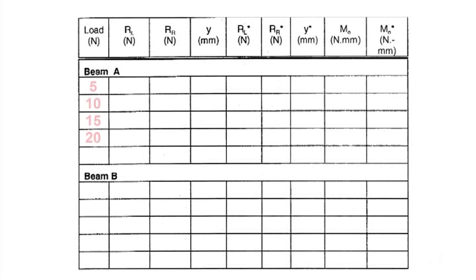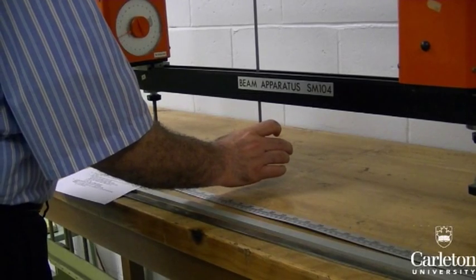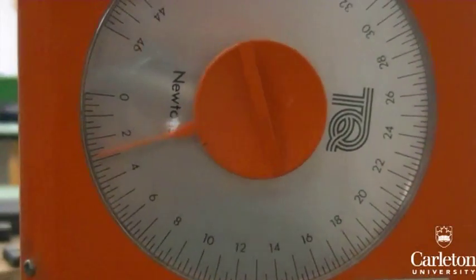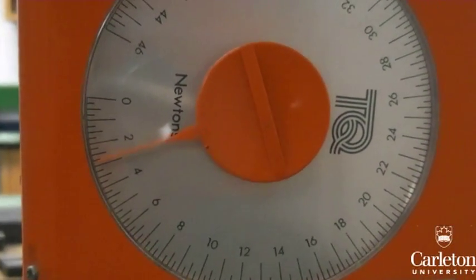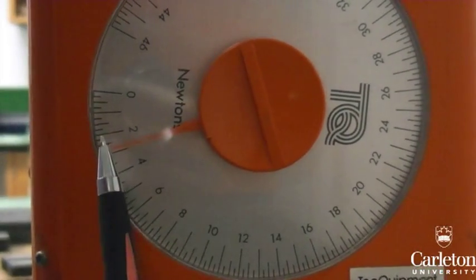The beam will be tested at loads of 5, 10, 15, and 20 newtons. For each case, add the appropriate load to the hanger. Notice that as a result, a load is being recorded on the two force gauges. This is, however, not the correct load as these gauges have also been displaced downward.